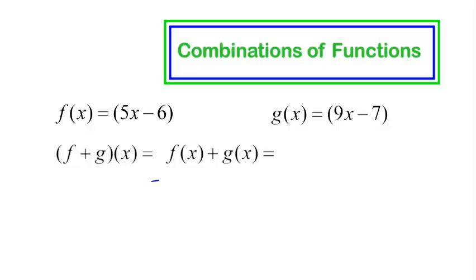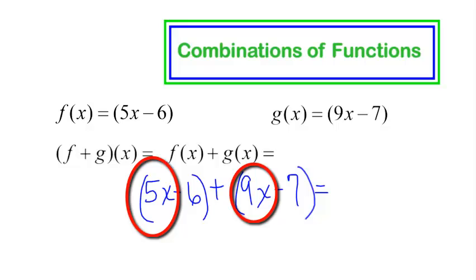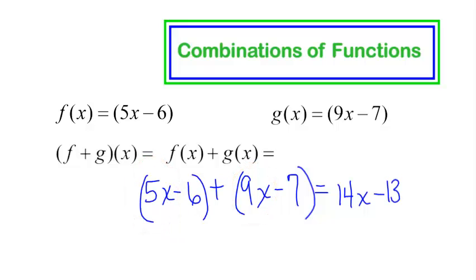So f(x) is 5x minus 6 plus g(x) is 9x minus 7. I should possibly leave these in parentheses. Since I was adding these, I won't run into a careless error because adding doesn't change signs. If this had been minus, I would have had to keep g(x) in parentheses and distribute that negative. But this is plus, so let's carry on. Add your like terms: 5x and 9x is 14x, and negative 6 and negative 7 is negative 13. Yes, it's as simple as that.